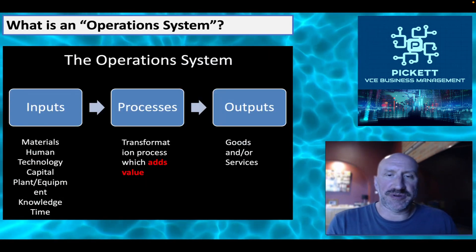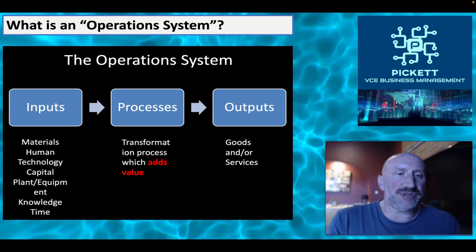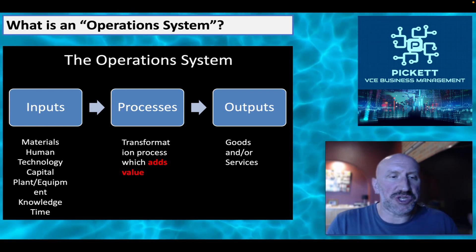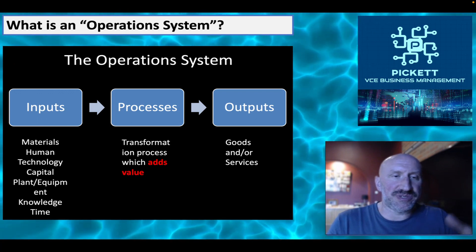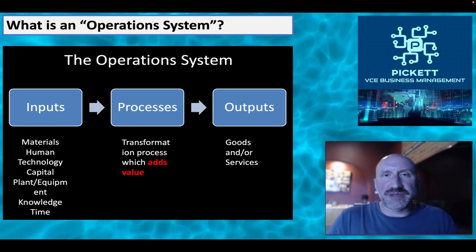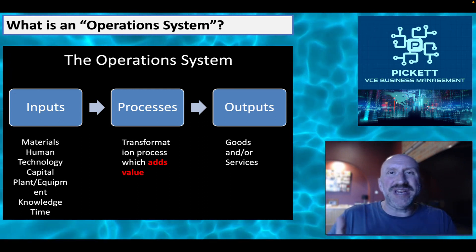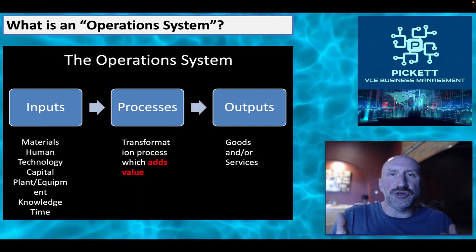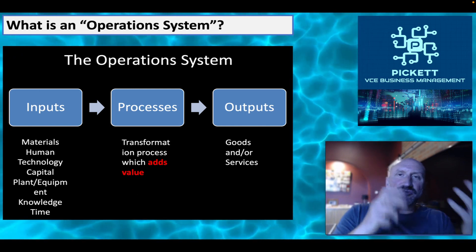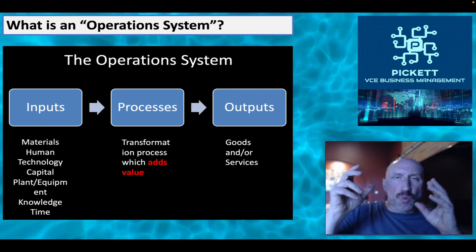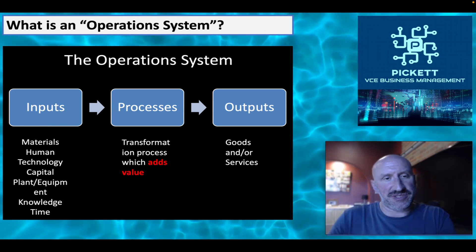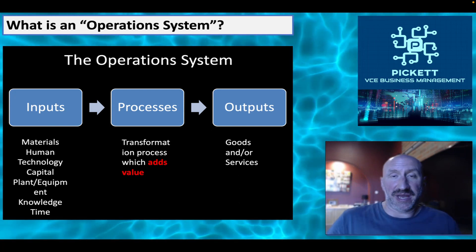Just expanding on that — what are inputs? What are processes? What are outputs? Inputs: some examples are materials, human, technology, capital, and so on. These are various inputs. Think of them like the ingredients — don't use that term — but they're the resources that you use. I'll give you definitions in a minute. They're all the resources that go into the ultimate production of your product or service.